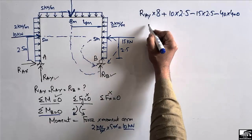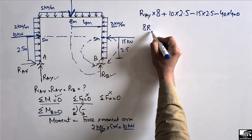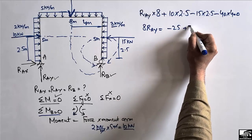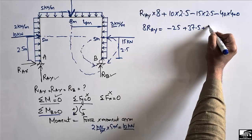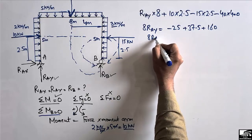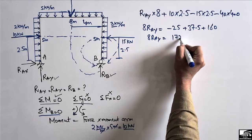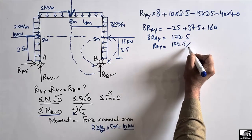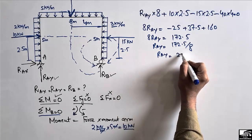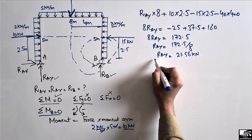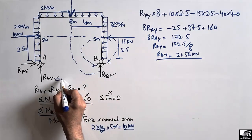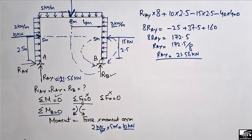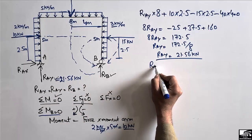Collecting all terms in the moment equation at B equal to zero, shifting all values to the right side: 8·RAY = 25 − 37.5 + 160... wait, simplifying gives 8·RAY = 172.5. Therefore RAY = 172.5 / 8 = 21.56 kN. So the vertical reaction at support A is RAY = 21.56 kN.